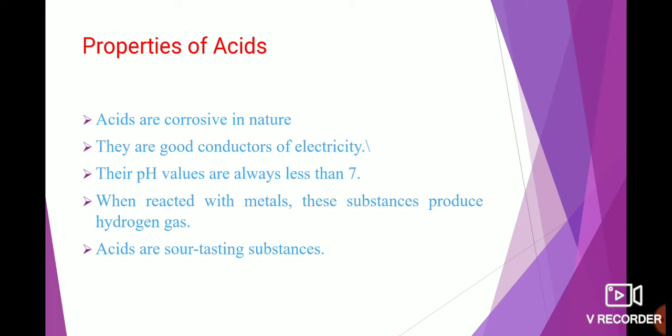Acids are good conductors of electricity. Their pH values are always less than 7 — we will see what pH means in the next few slides. When acids react with metals, they produce hydrogen gas (H₂). Acids are also sour-tasting substances.